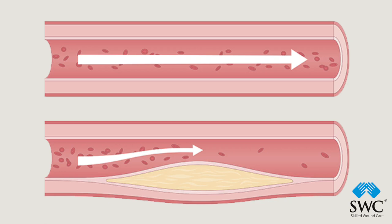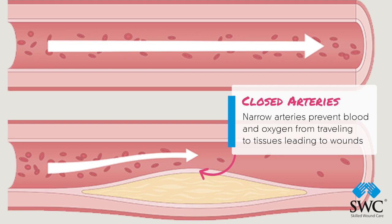Once the arteries start to close, there is less blood and oxygen to the tissues, causing them to be more susceptible to wounds. Decreased blood flow and oxygen will lead to decreased moisture in the tissue of the lower extremity.